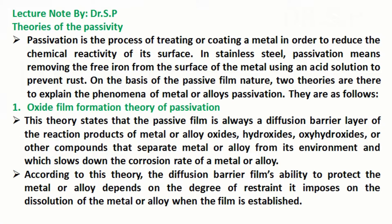Theories of passivity. Passivation is the process of treating or coating a metal in order to reduce the chemical reactivity of its surface. In stainless steel, passivation means removing the free iron from the surface of the metal using an acid solution to prevent rust. On the basis of the passive film nature, two theories are there to explain the phenomena of metal or alloys passivation.